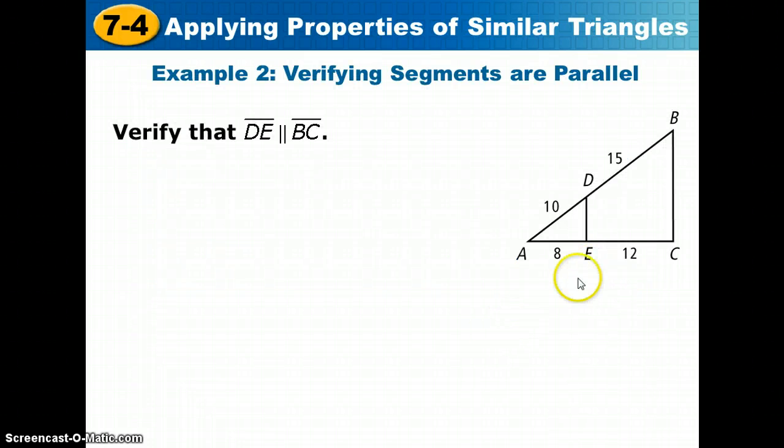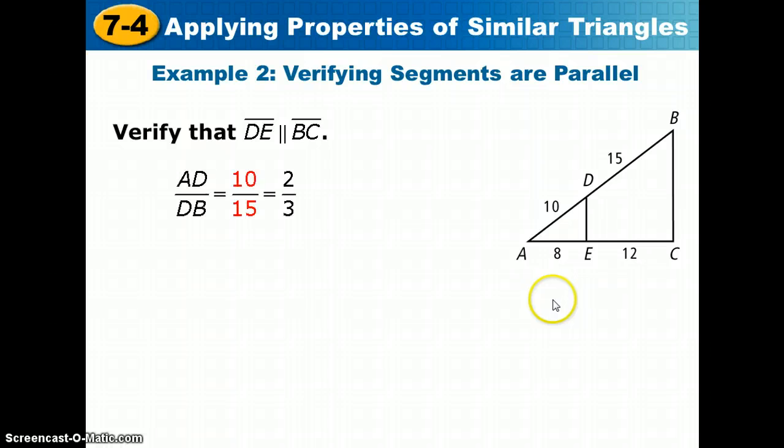So in example 2, we will be verifying something very similar. We want to verify that DE is parallel to BC using the converse of the triangle proportionality theorem.